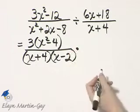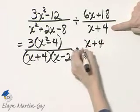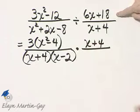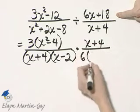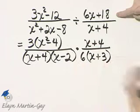Then times the reciprocal, so this x plus 4 is now in the numerator, and here there's a common factor of 6, and when I factor it out, I have left x plus 3.